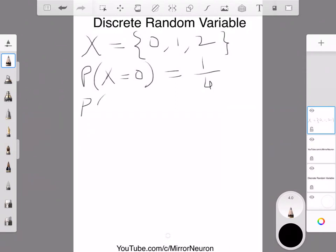And what is the probability of our random variable having the value 1, which means getting one head in our current example?